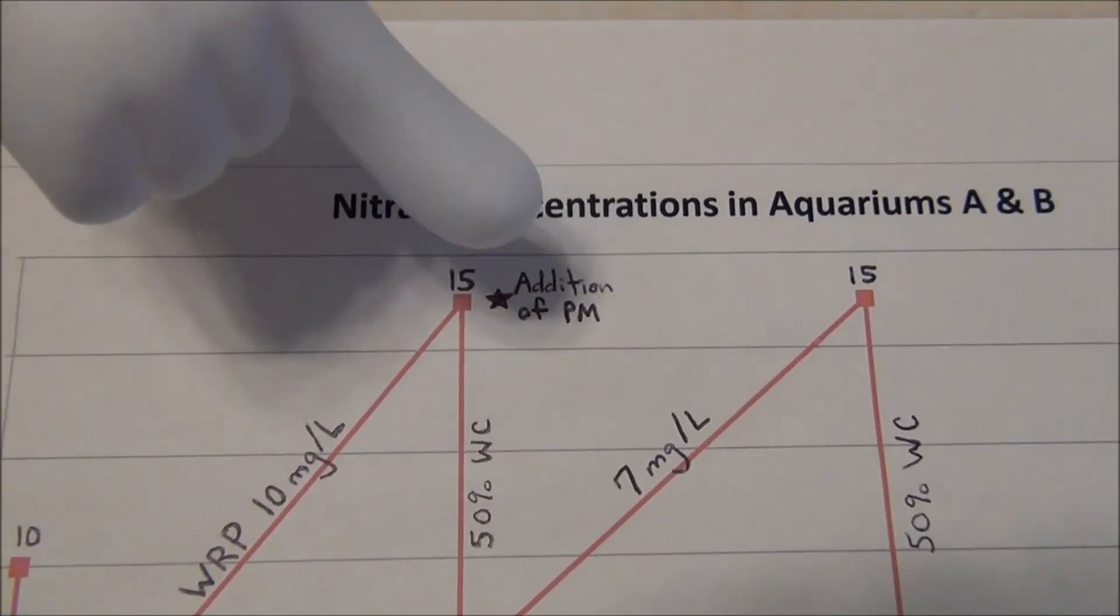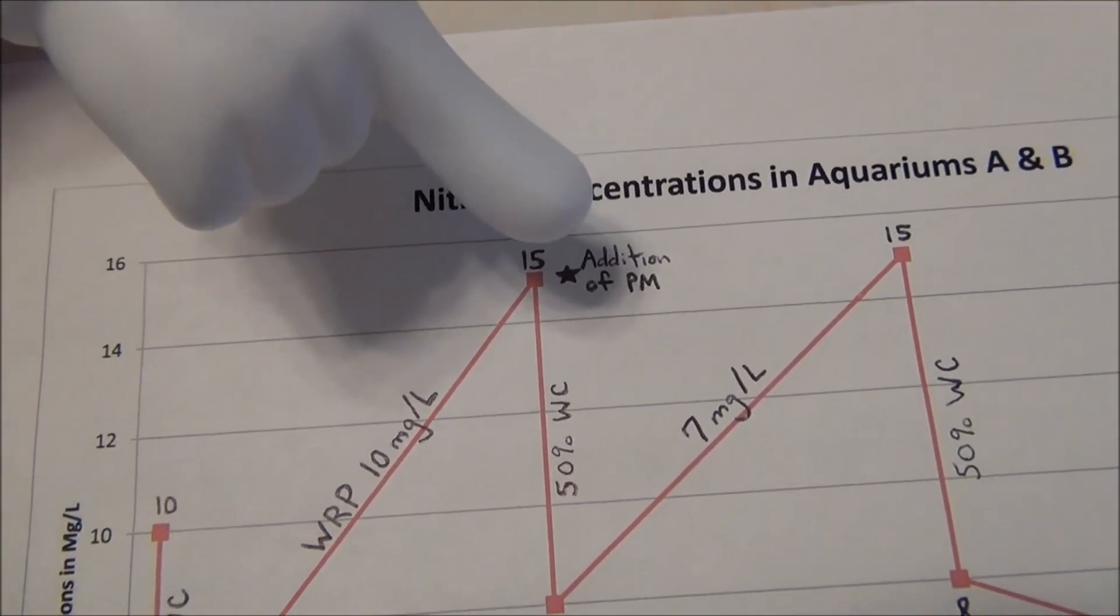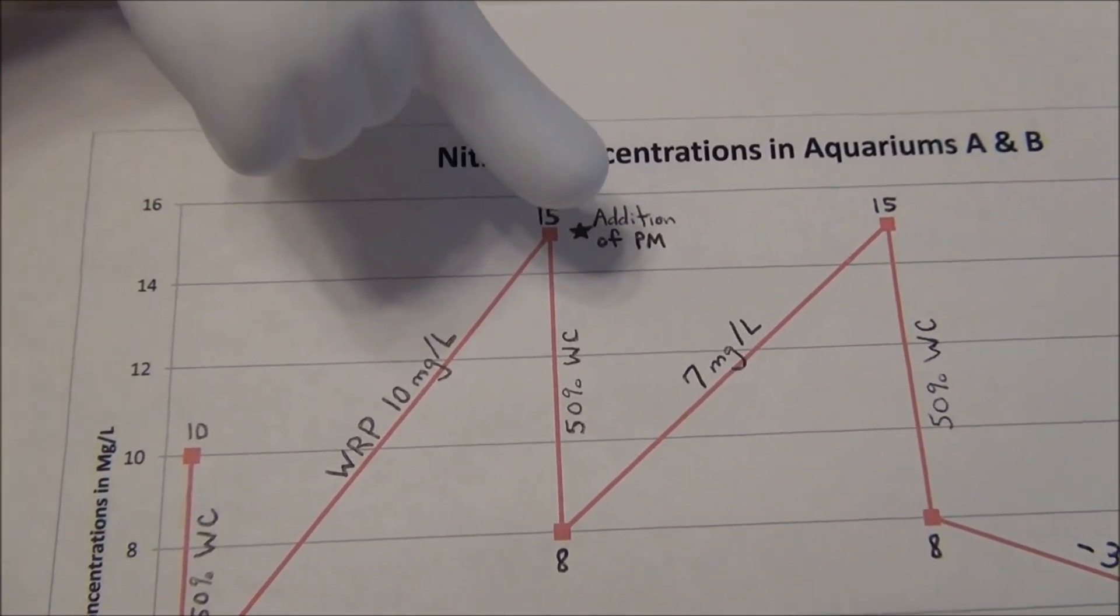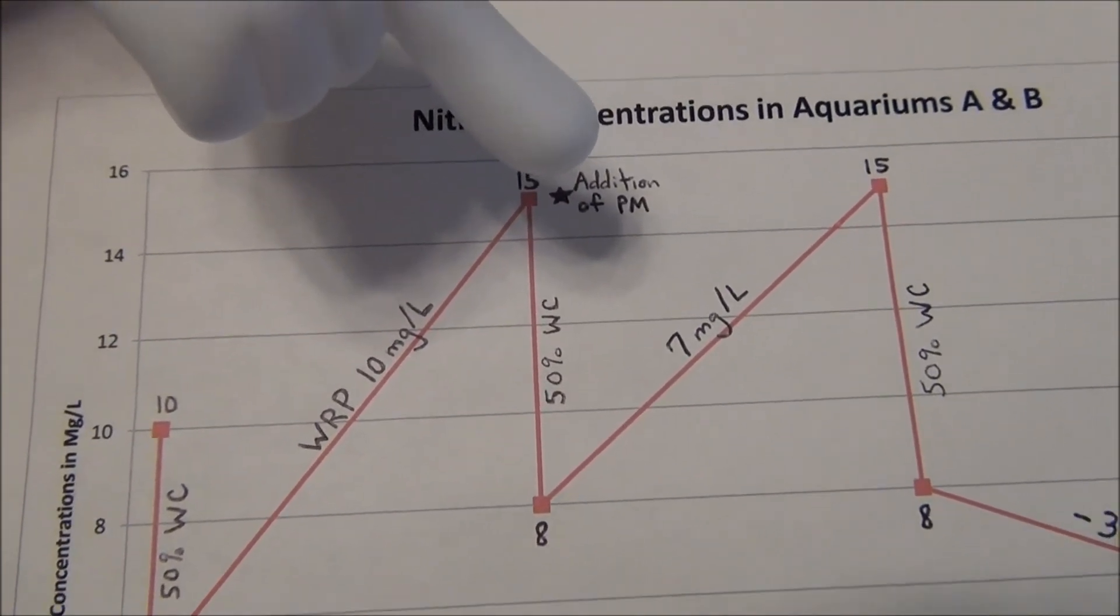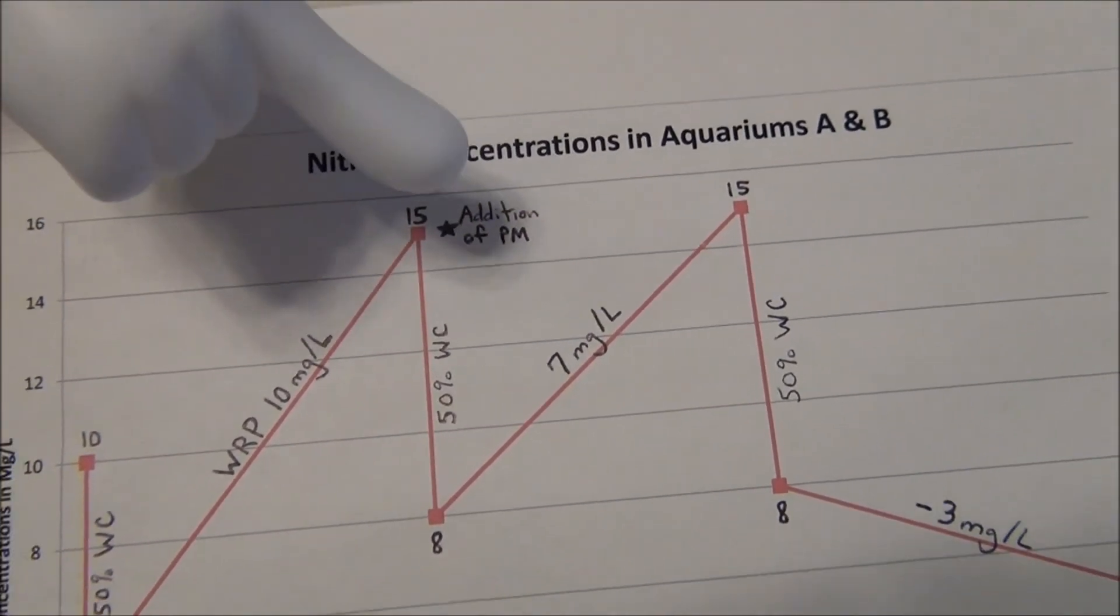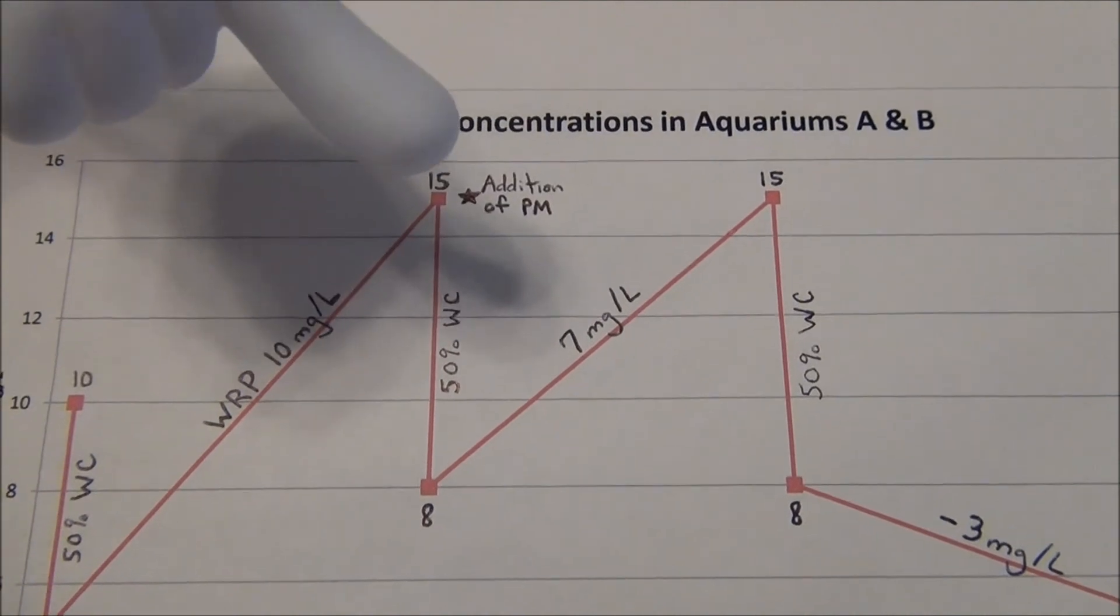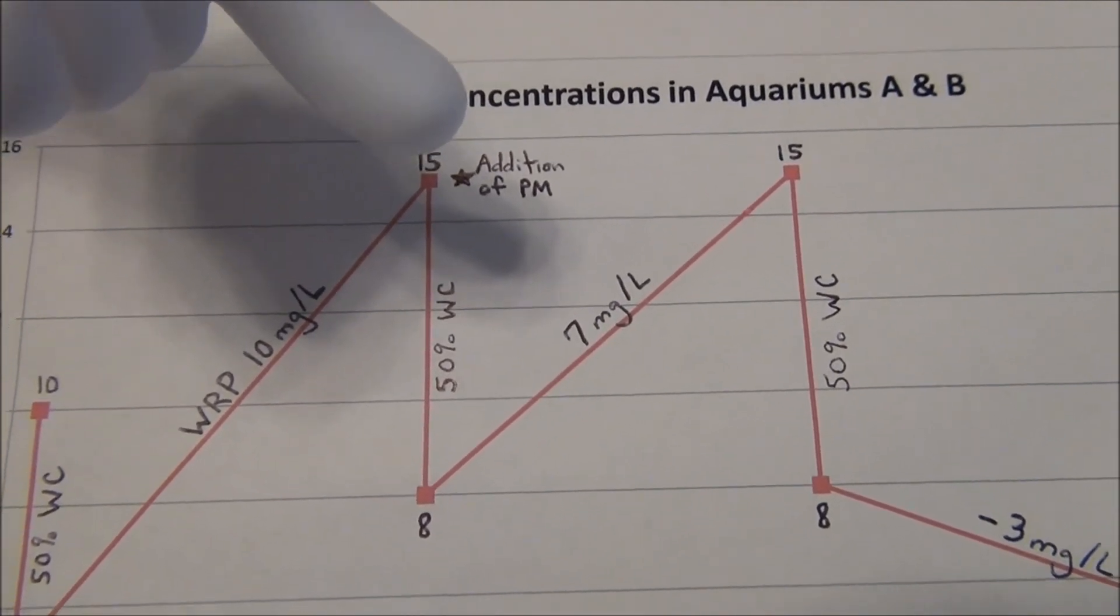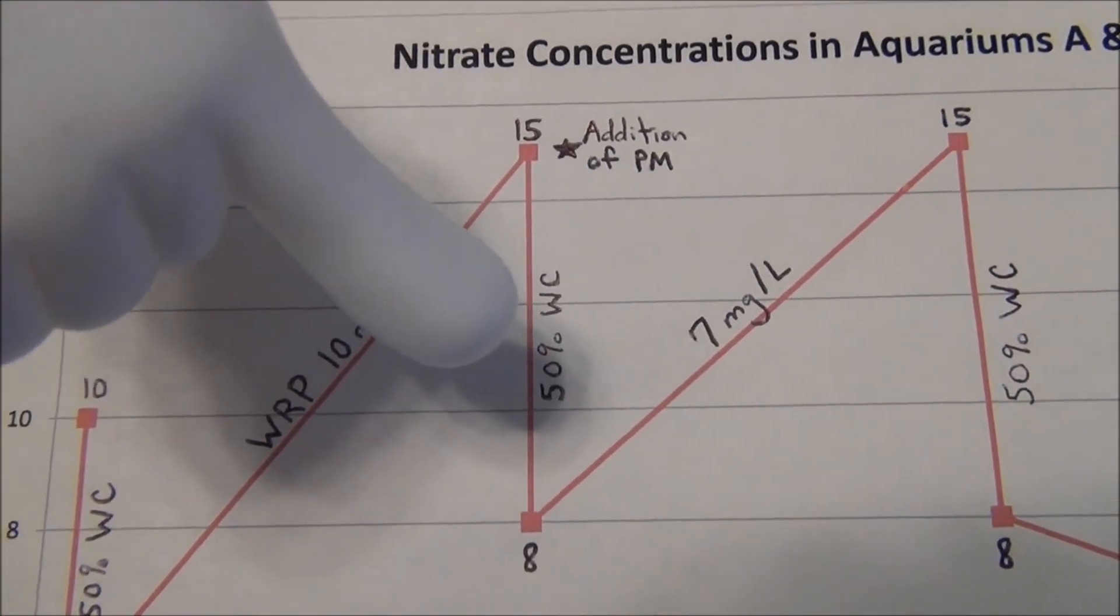At this time, immediately after the water change, I added 128 grams of Seachem's pond matrix. I used established media out of the sump in my 150-gallon aquarium. I'm starting with established pond matrix. It takes a lot longer for it to colonize whenever you first add it to your aquarium, but for the purpose of this experiment, the experiment is due on Wednesday, I had to get these results quickly. So October 20th, 128 grams was added per each aquarium. We immediately did another 50% water change, and our nitrate concentrations went to approximately 8 milligrams per liter.